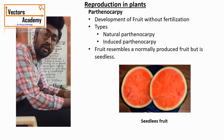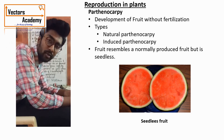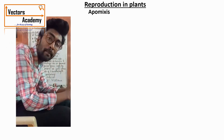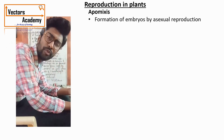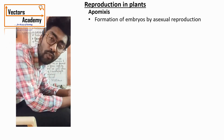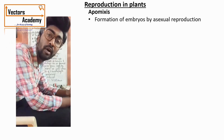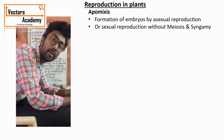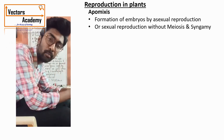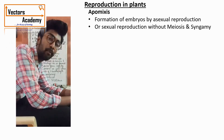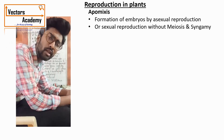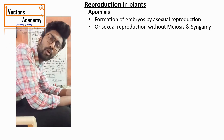The next topic is apomixis. 'Apo' means without and 'mixis' means mixing, so apomixis means without the mixing of gametes. Apomixis is a mode of asexual reproduction where there is formation of a new individual without the process of fertilization and without the involvement of sex gametes.